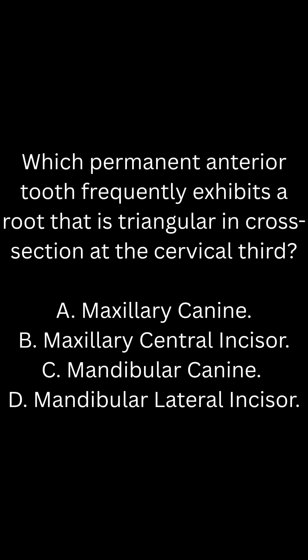Question 4 — Root anatomy for single rooted teeth: Which permanent anterior tooth frequently exhibits a root that is triangular in cross-section at the cervical third? A. Maxillary canine. B. Maxillary central incisor. C. Mandibular canine. D. Mandibular lateral incisor.